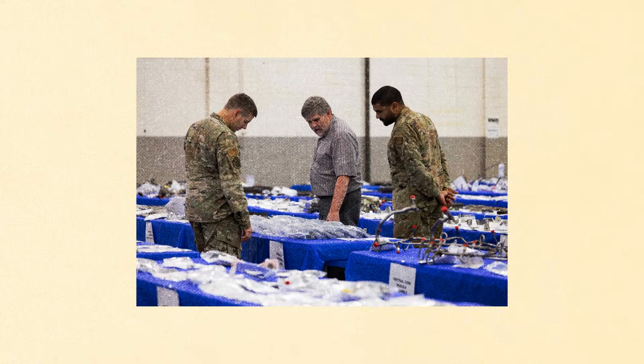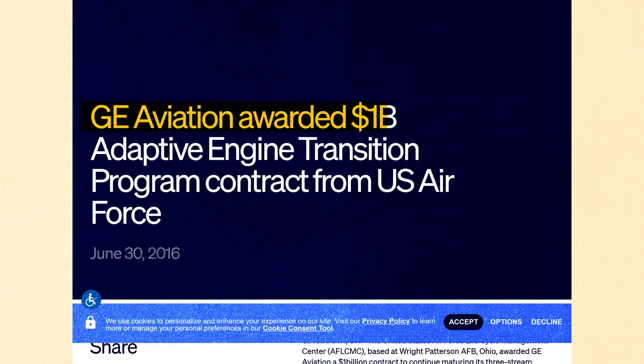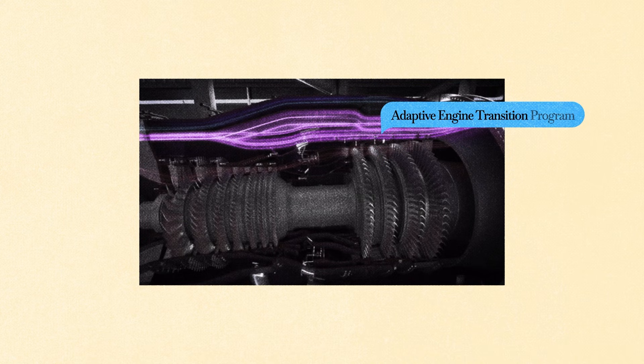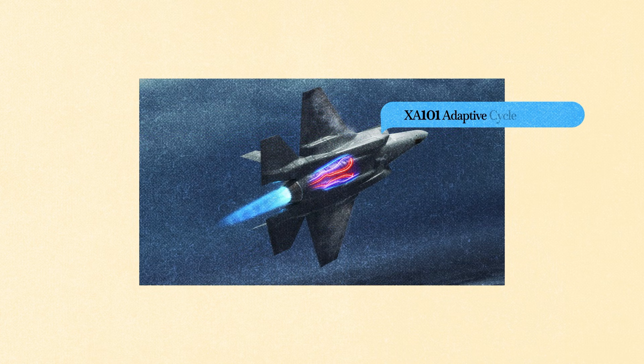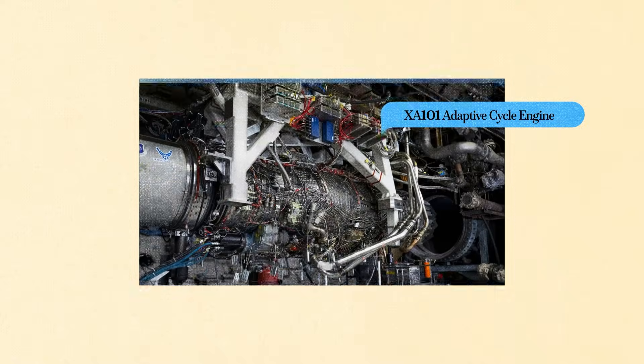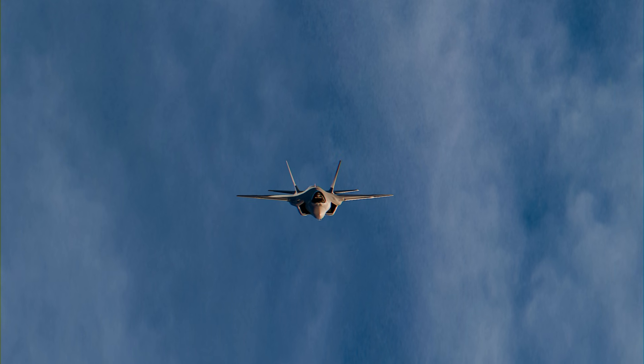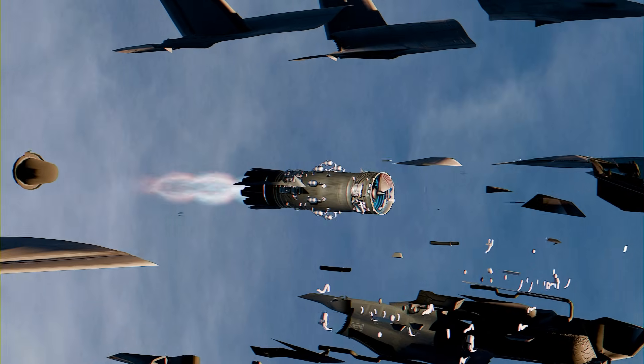The US Air Force assigned GE Aerospace, formerly GE Aviation, and Pratt & Whitney to develop the Adaptive Engine Transition Program. GE's version is the XA100 adaptive cycle engine, while Pratt & Whitney's is the XA101. But in today's video, we'll talk only about XA100 by General Electric.